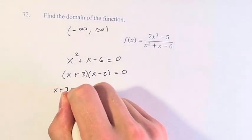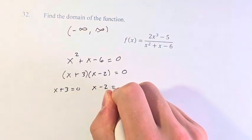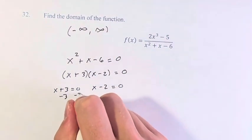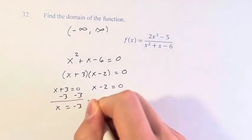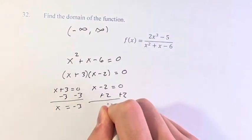Therefore, x plus 3 is equal to 0, or x minus 2 is equal to 0. In this case, x is equal to negative 3. In this case, x is equal to 2.